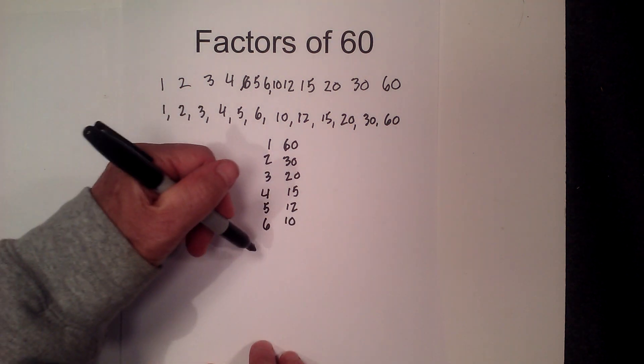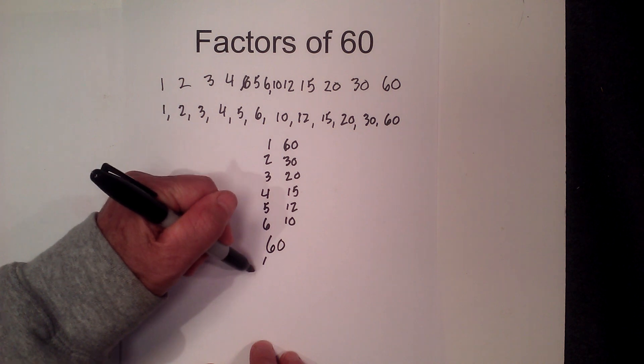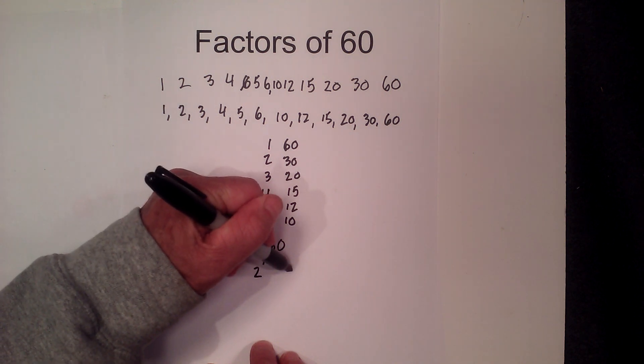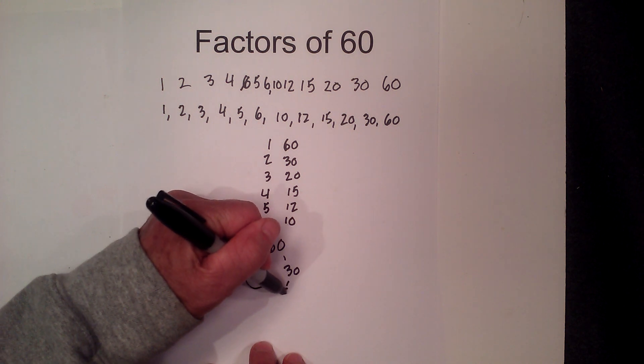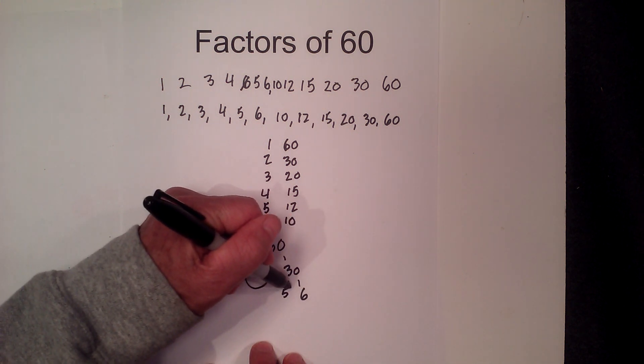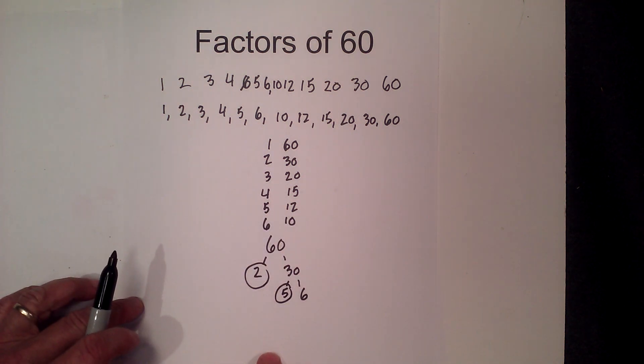Now to find the prime factors, I'll complete a factor tree. Let's try 2 times 30. Circle the 2 because it is prime. And then how about 5 times 6, that equals 30. Circle the 5 because it is prime.